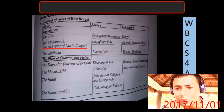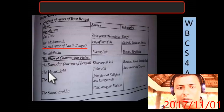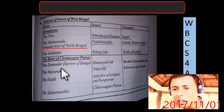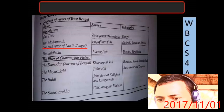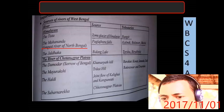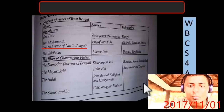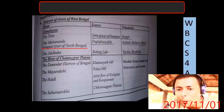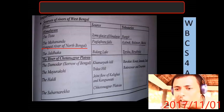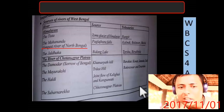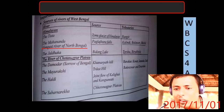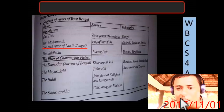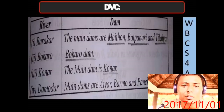The Damodar River is known as the 'Sorrow of Bengal.' It originates from the Khamarpoot Hills, with Barakar and Konar as tributaries. Mayurakshi originates from Trikut Hill with Barkeshwar and Damodar as tributaries. The Haldi is a joint flow of Kali Ghai and Kangnavati. Subarnarekha originates from Chota Nagpur Plateau. These are the important rivers of Bengal.